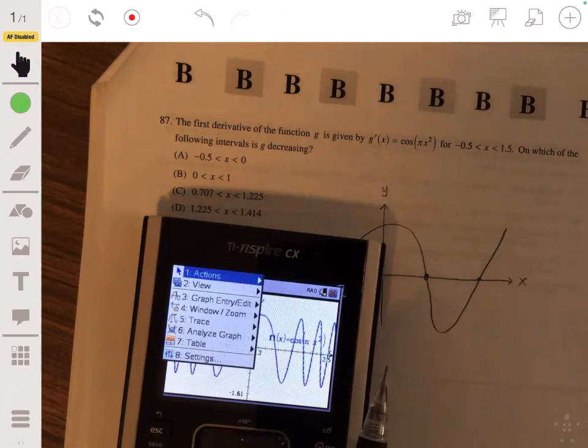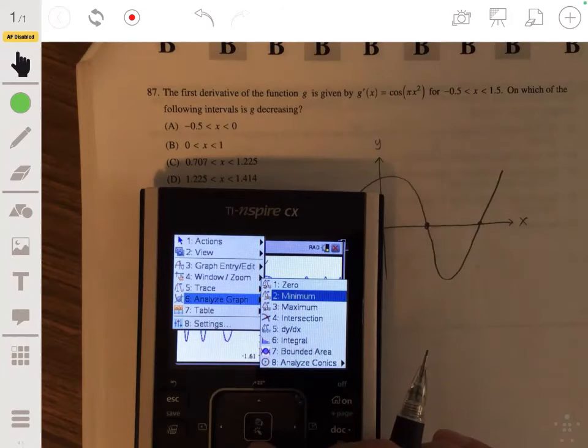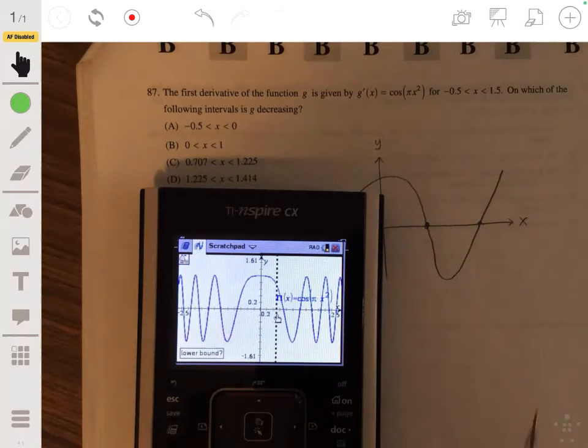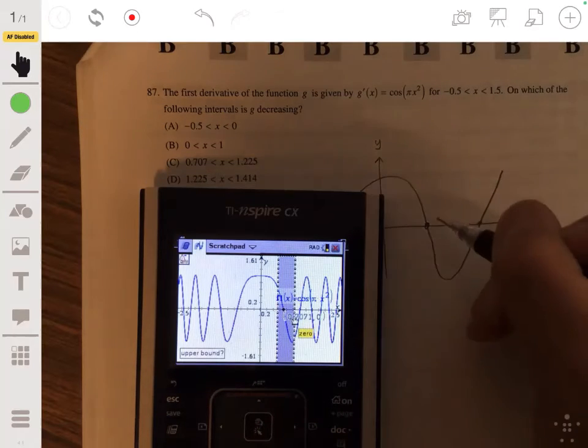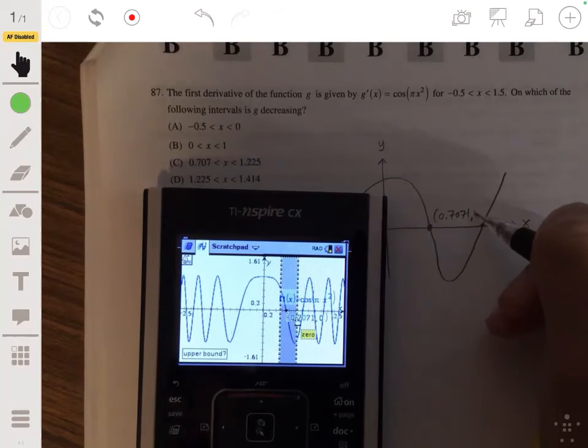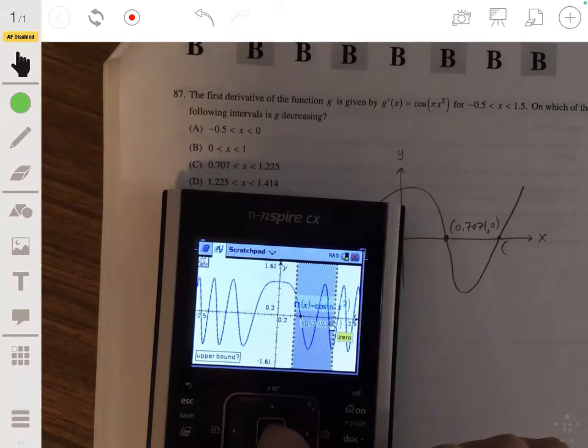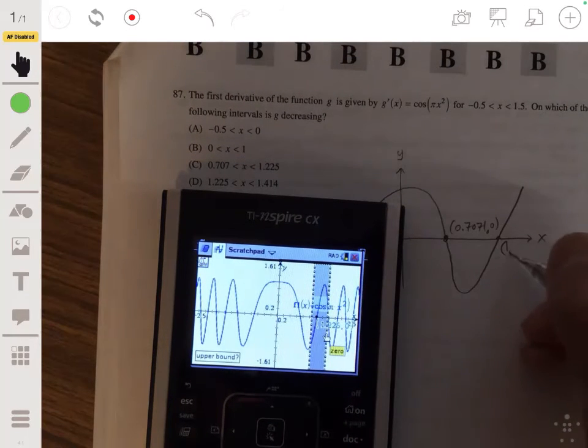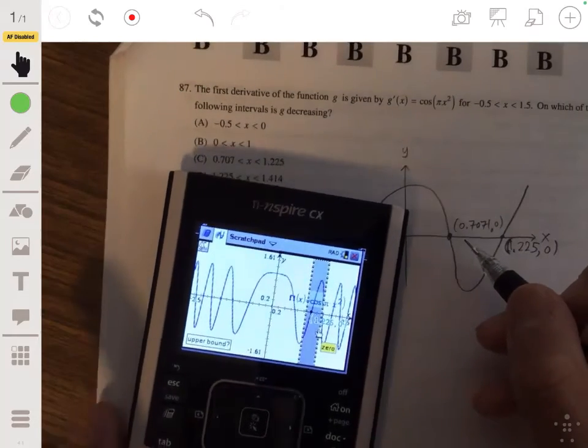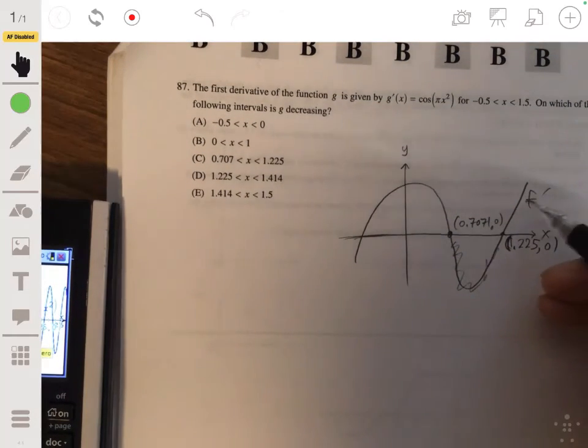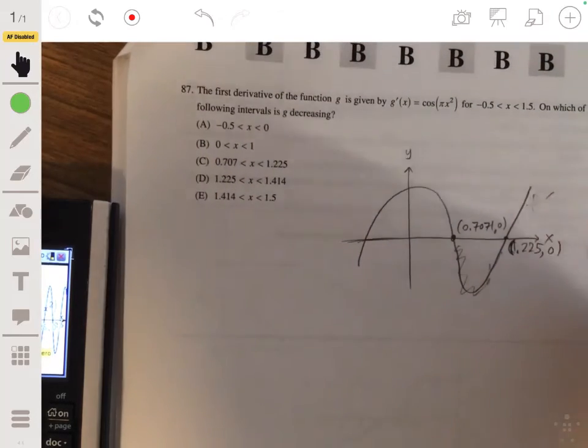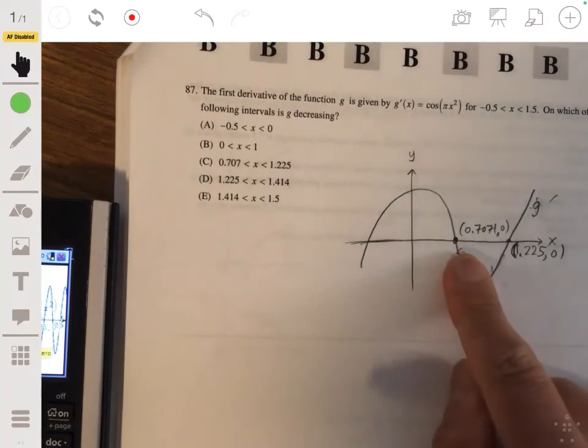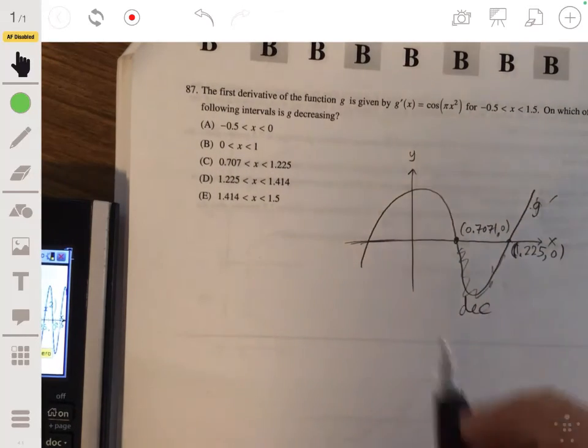So let's see what those zeros are. Lower bound, and so that's 0.7 ish. 0.7, 0.1. Let's look at the other one. So it's like 1.225. So it's decreasing on this interval here because the derivative is negative. Or this is G prime actually. Decreasing from 0.7 to about 1.22. So the answer would be C.